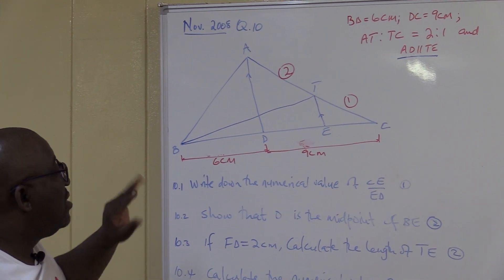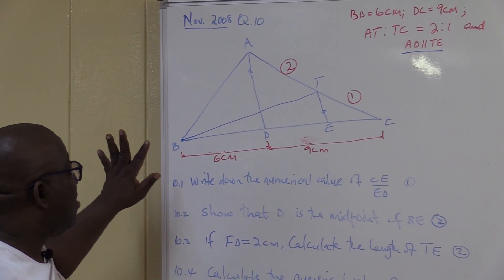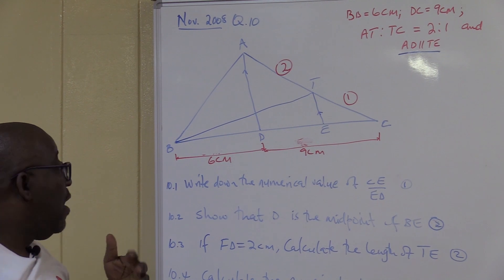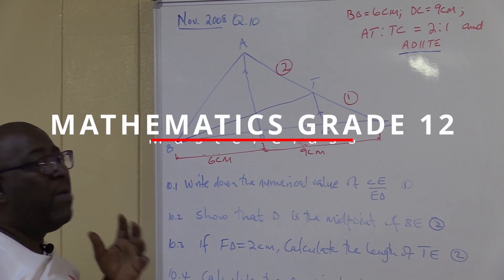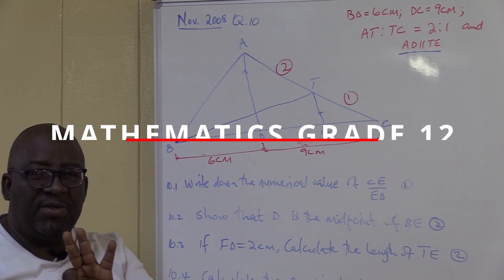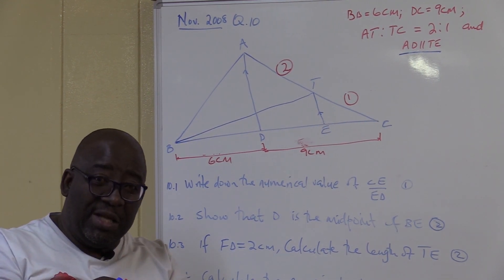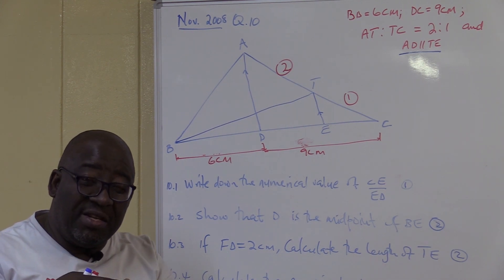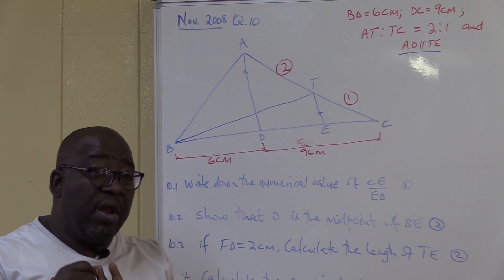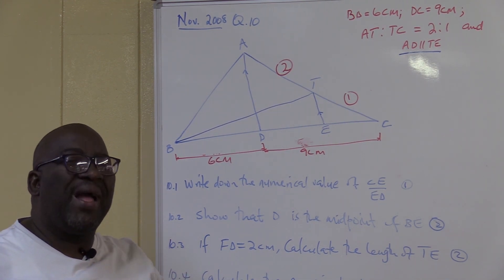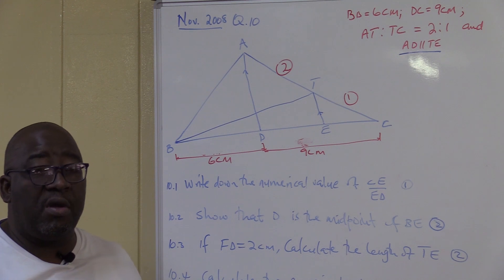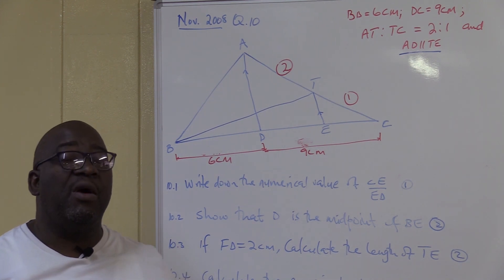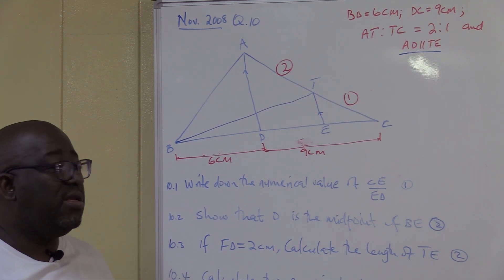This is how they set this question in the paper — it was question 10, Euclidean geometry. I'm armed with three theorems: number one, equal altitudes; number two, proportionality theorem; number three, similarity theorem. The solution will come from those three theorems, and of course my grade 8 and grade 9 background becomes handy here.